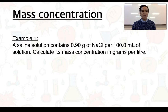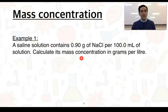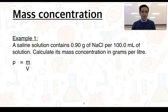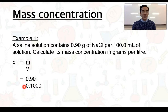Let's look at an example. A saline solution contains 0.90 grams of NaCl per 100.0 mils of solution. We need to calculate its mass concentration in grams per litre. We state the formula: mass concentration equals mass over volume. We substitute in the values, but we must convert volume from mils to litres — 100 mils becomes 0.1000 litres. So 0.90 divided by 0.1000 gives us 9.0 grams per litre to two significant figures.